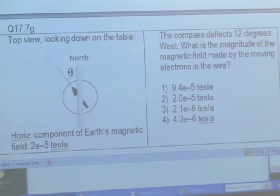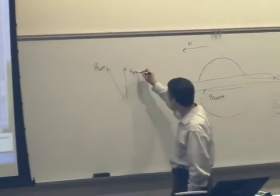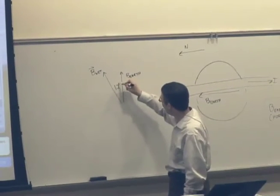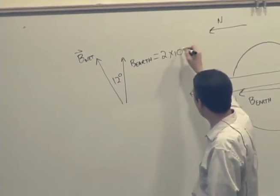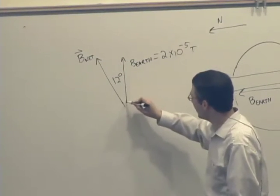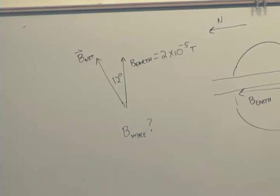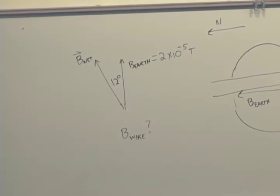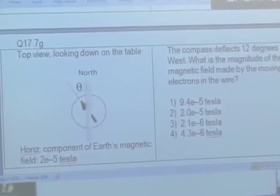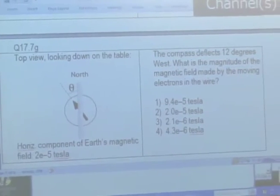So let's redraw it here. That's the direction of the net magnetic field. B of the Earth is this way. This is 12 degrees. And you know B of the Earth is 2 times 10 to the minus 5 Tesla. So the question is, what's the magnitude of the field due to the wire, magnetic field due to the wire?